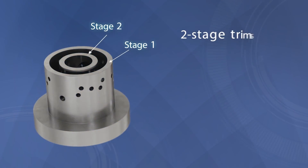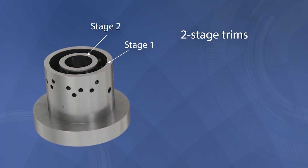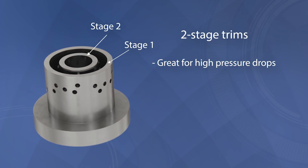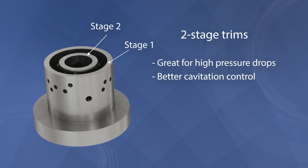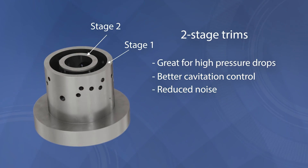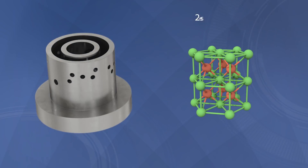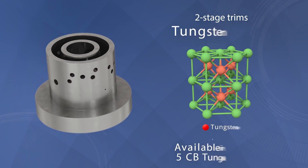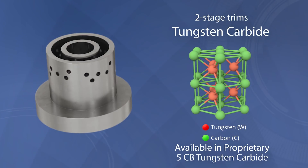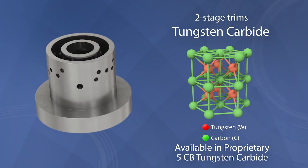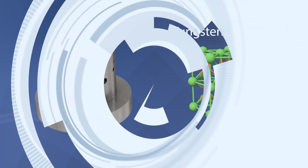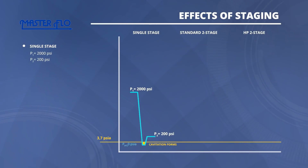For demanding applications with high pressure drops, two-stage trims can be used. They consist of concentric cages which handle pressure drops in stages, reducing the pressure dip at the Vena contracta. This results in better control over cavitation and noise. MasterFLOW's multi-stage trims are available in service-specific materials, including the proprietary 5CB tungsten carbide, for higher erosion and corrosion resistance. Multi-stage trims can also be engineered to provide custom flow curves, and the effects of staging can be seen on these graphs.